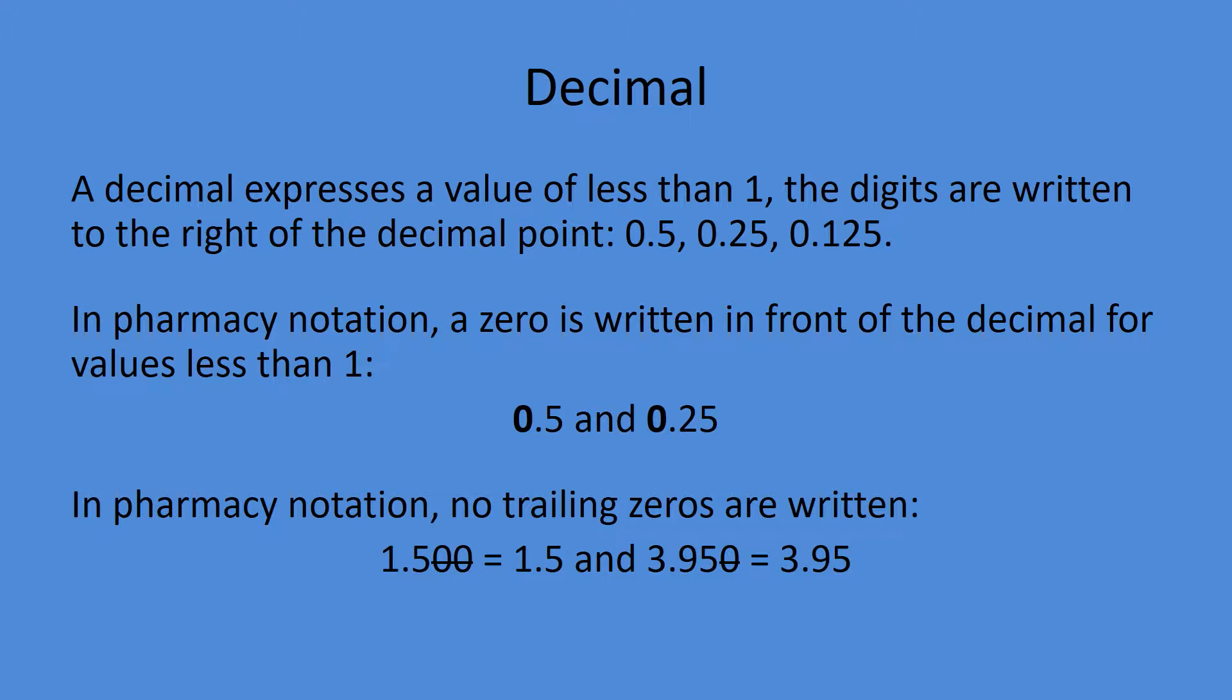A decimal is a number that includes a portion that's less than one, or it's a number that is less than one itself. For example, 0.5, 0.25, 0.125. The most important thing to note here is pharmacy notation. To prevent errors, we always want to write a zero in front of a number less than one. You want to avoid just writing .5 or .25 because if it gets transmitted via fax or email, that decimal point may not show up, and 0.5 might look like five. That's a tenfold overdose.